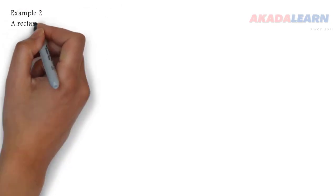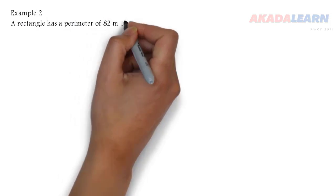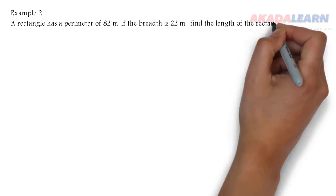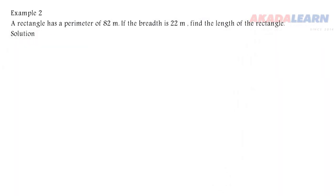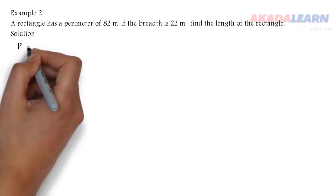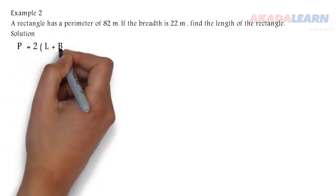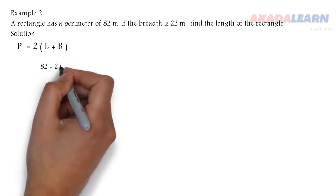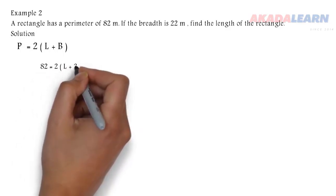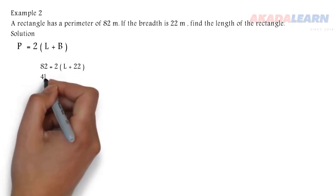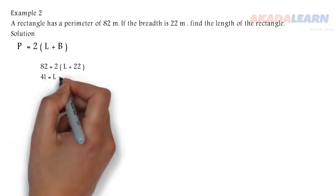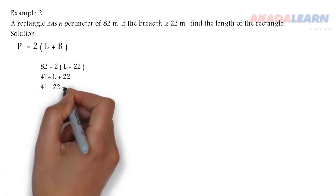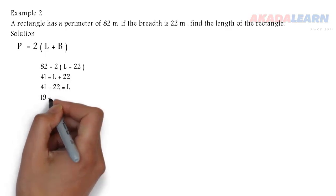Let's see another example. A rectangle has a perimeter of 82 meters. If the breadth is 22 meters, find the length of the rectangle. Solution: We already said perimeter equals 2 multiplying L plus B. Our perimeter is 82. We substitute in our length—that's what we are looking for—and our breadth is 22. 82 divided by 2 is 41. We subtract 22 from both sides, so we find that our length is 19 meters.